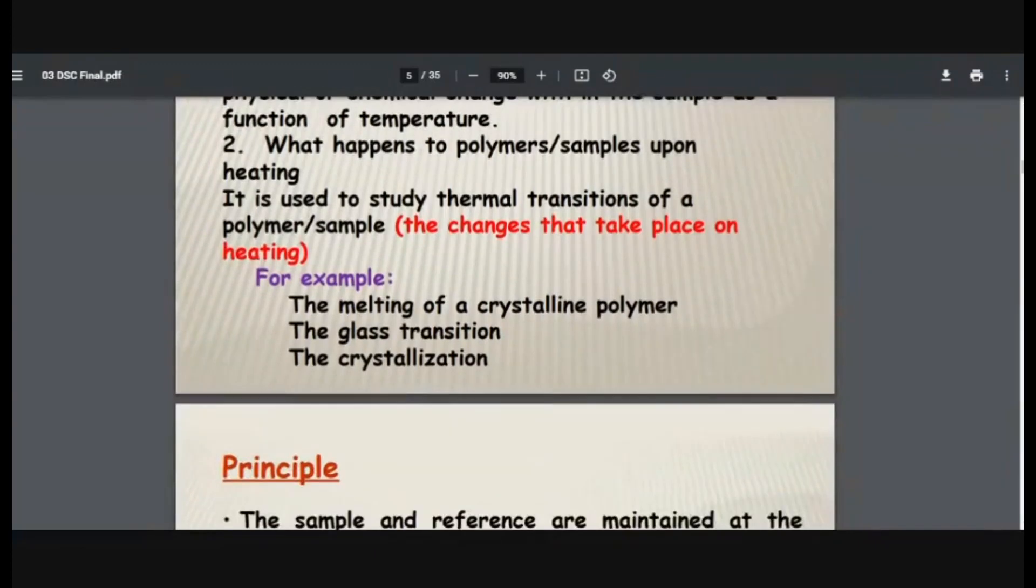Example: melting of crystalline polymer, then glass transition temperature, and then crystallization. Now, first and third you are aware of - what is crystallization and what is melting of any polymer. Glass transition temperature - see, sometimes there are many polymers, even you must have observed it, many plastics. When you heat those polymers, there comes a temperature where their property changes.